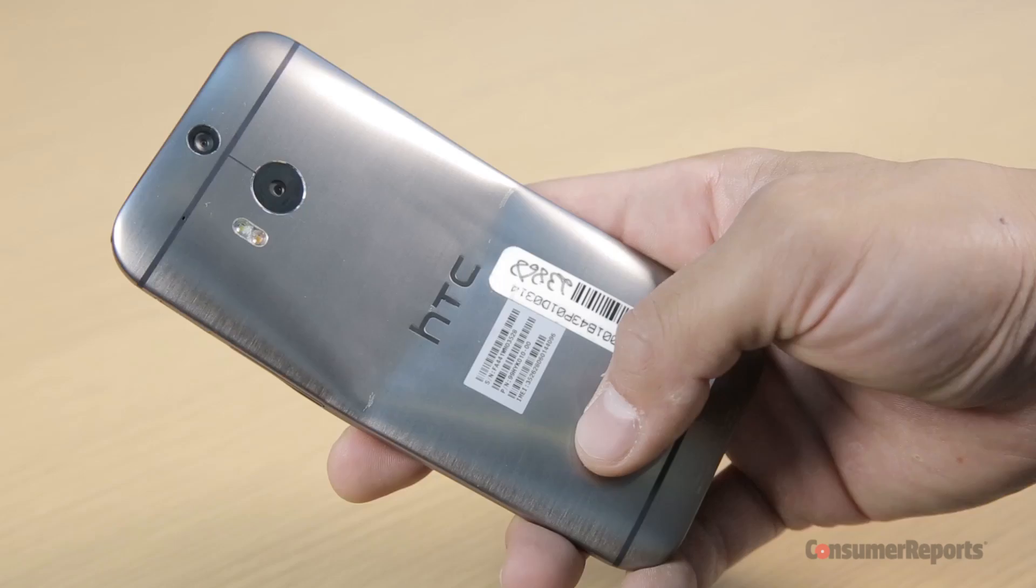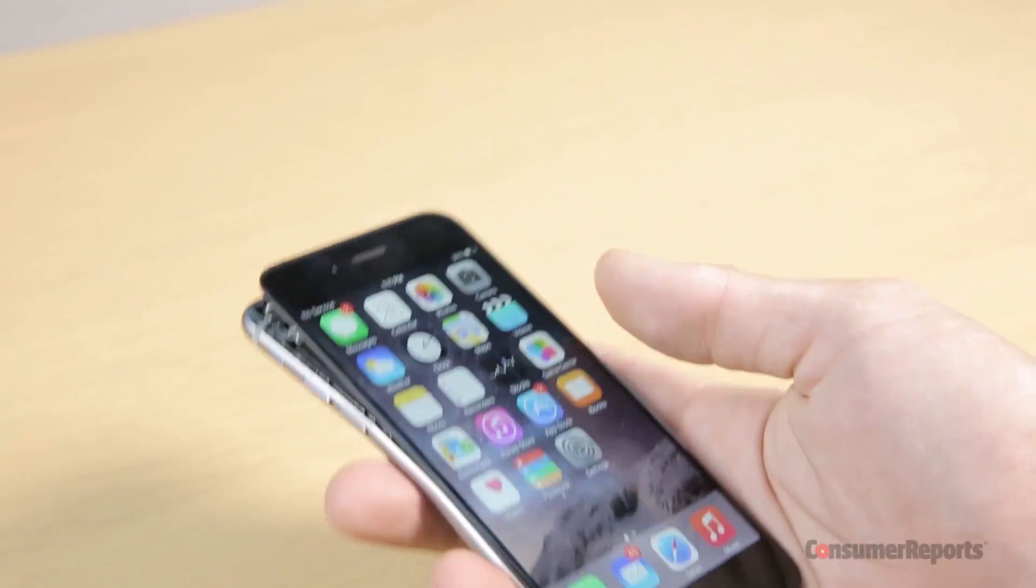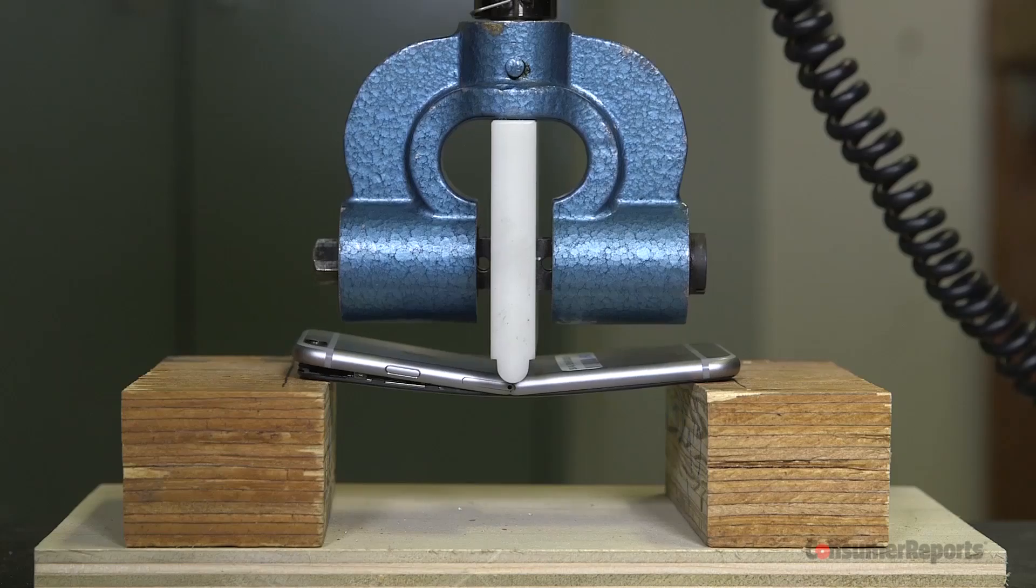One note, a bent phone is bad, but can still function. All the iPhones and HTC One looked beat up after our initial tests, but were still working. So we went further to see how much more they could take.